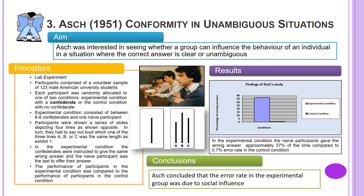The performance of participants in the experimental condition was compared to the performance of participants in the control condition. The findings of ASH's study showed that in approximately 30% of trials the naive participant in the experimental condition gave the wrong answer, compared to a 7% error rate in the control condition. ASH concluded that the error rate in the experimental group was due to social influence.